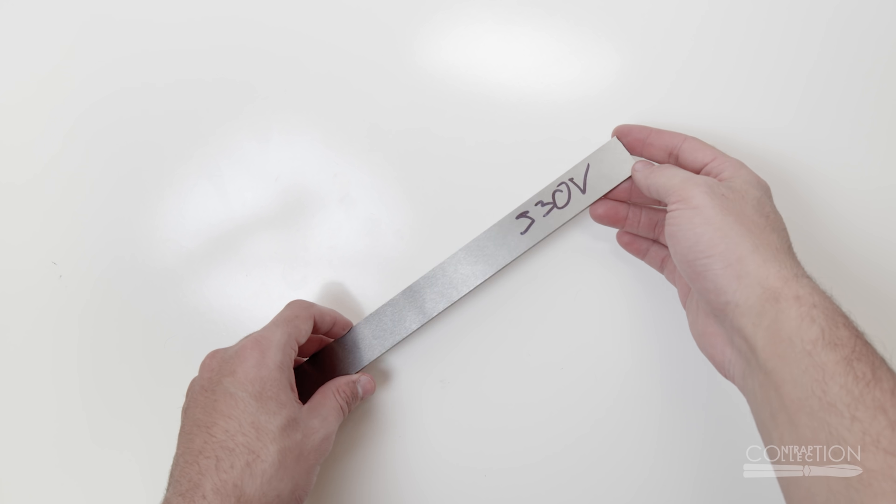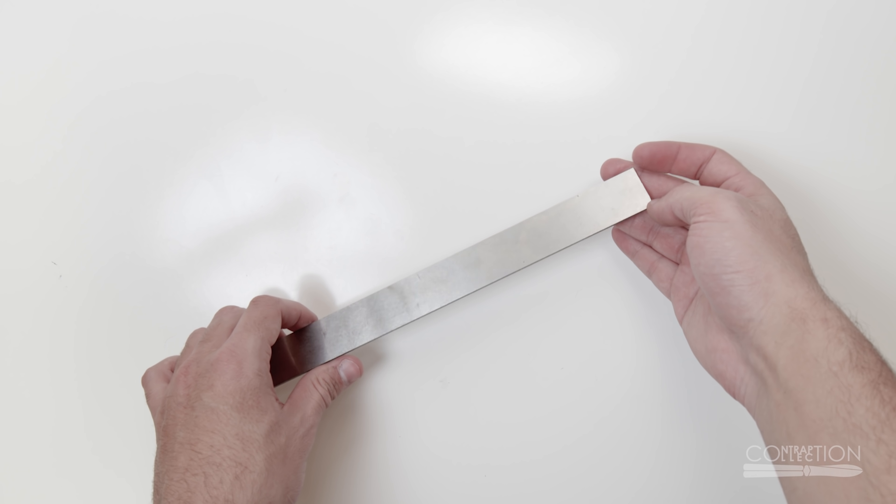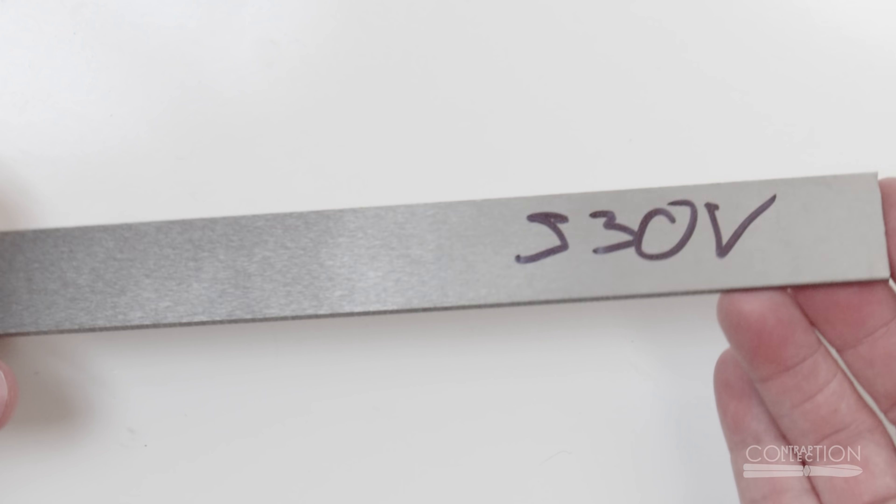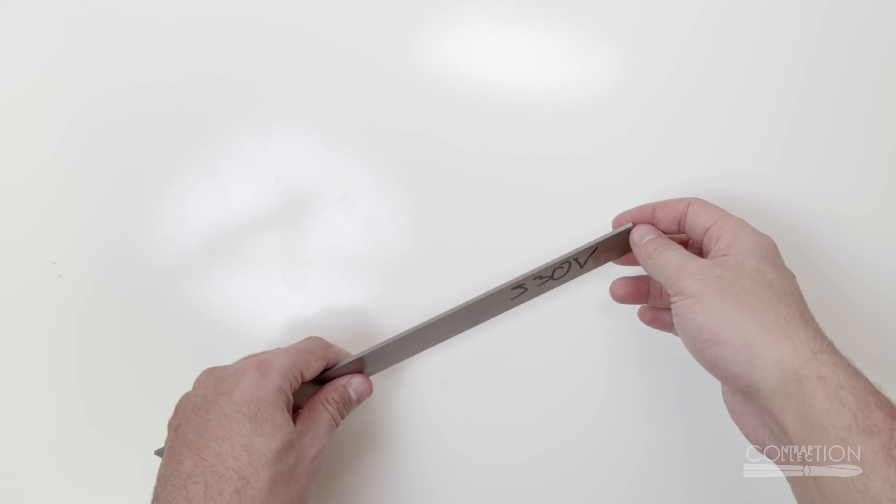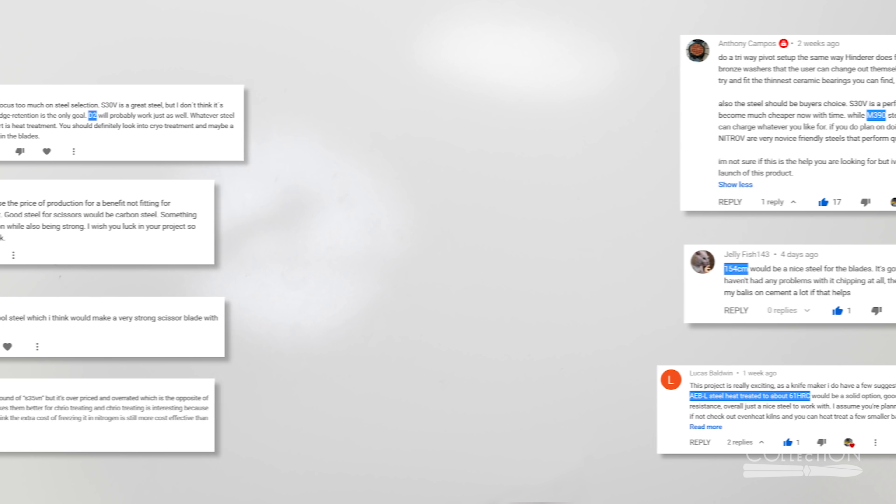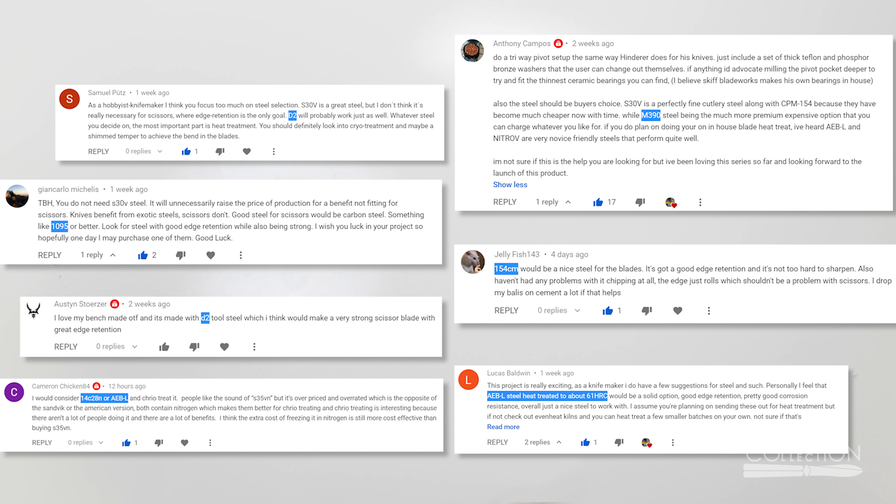This is S30V. I'm not sure if this steel makes sense to use for scissors, but it was one of the only stainless blade steels I knew about when I bought it a long time ago. I've gotten many suggestions, and I'm welcome to more.